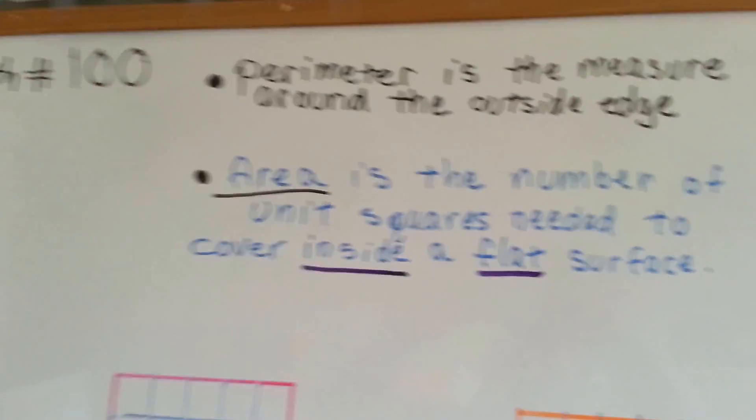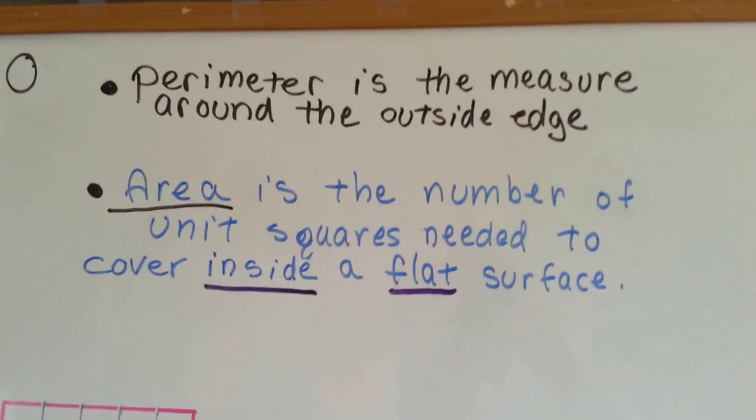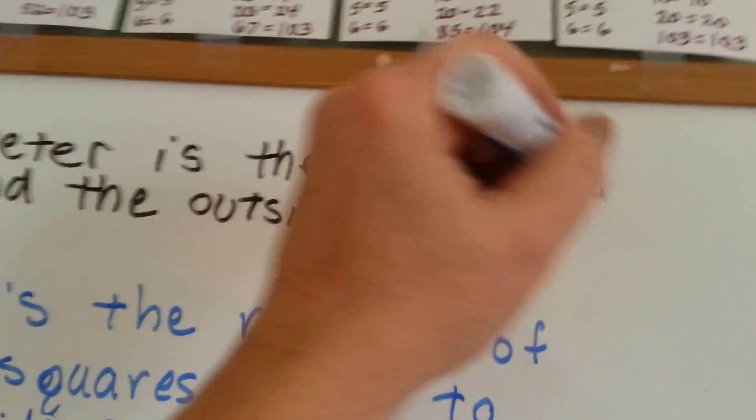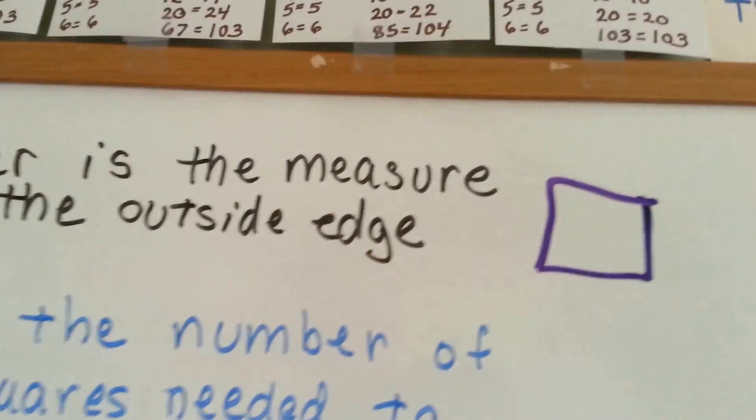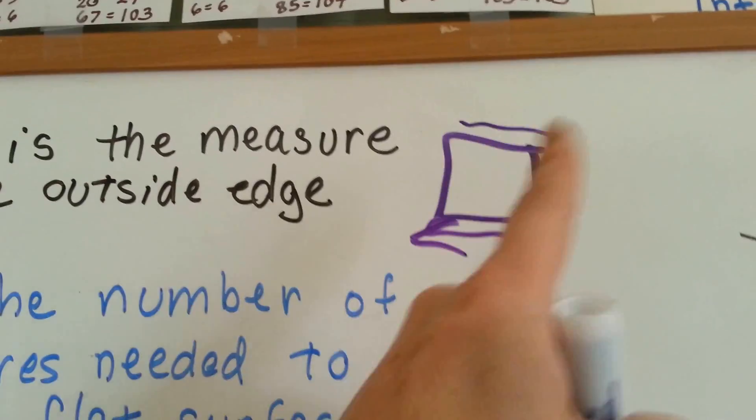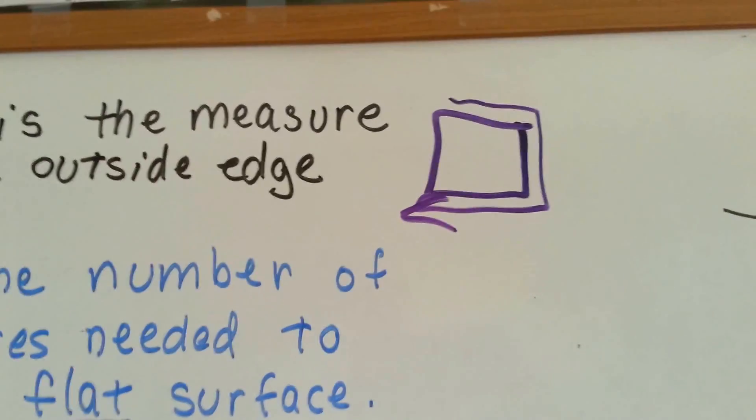If you remember from our other videos, perimeter is the measure around the outside edge of an object. So if you have a square or a shape, the perimeter is the measure going all the way around the outside of the object.